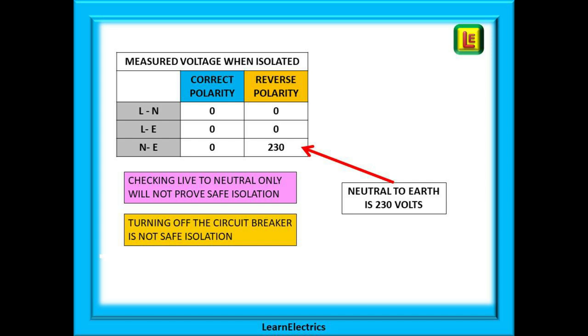If we only measured live to neutral it would not tell us the full story. It would not guarantee safety if the circuit was reverse wired. Look at this table. If we isolated the light circuit at the MCB and checked only the live to neutral voltage, we would find that the voltage was zero volts whether the circuit was correctly wired or reverse wired. Test further. The live to earth is zero also and that seems correct. But the voltage between neutral and earth is 230 volts. This is the danger. Relying on just a live to neutral check when isolating is not enough.